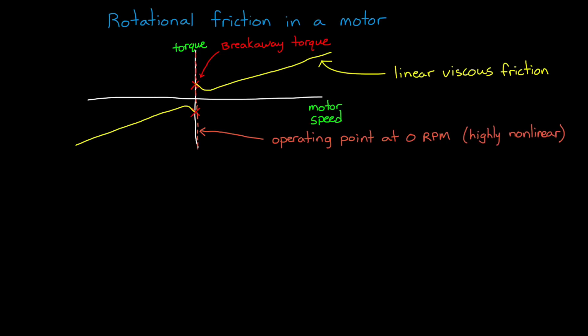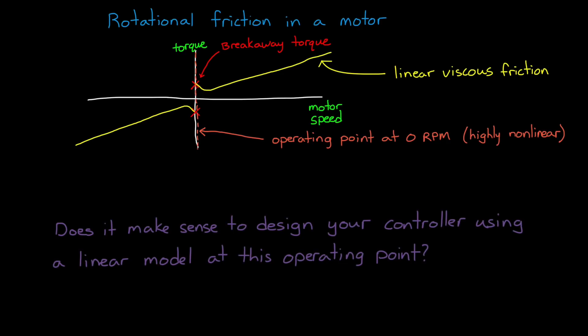Now let's think about operating the motor around zero RPM. For example, you want to build a servo that can rotate in both directions at very low speeds. Does it make sense to design your controller using a linear model at this operating point? Well, clearly, frictional torque is discontinuous at the operating point, so we need to think about linearization carefully.